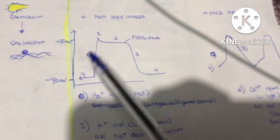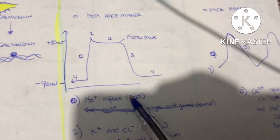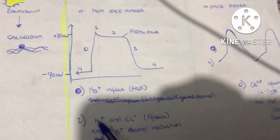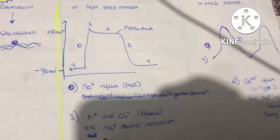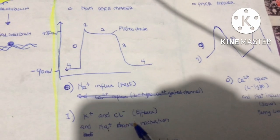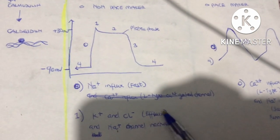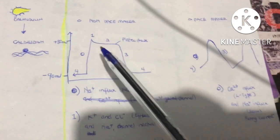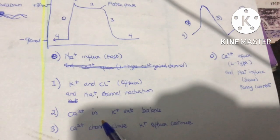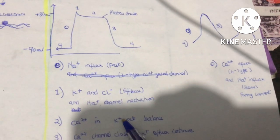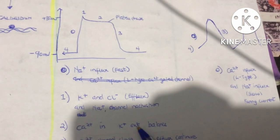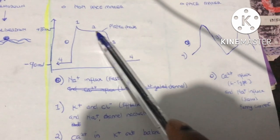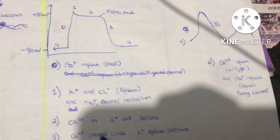Phase 1 is due to inactivation of sodium voltage-gated channels, with opening of potassium voltage-gated channels and chloride voltage-gated channels — potassium and chloride efflux begins. Phase 2 is the plateau phase, due to calcium influx and potassium efflux balancing each other, giving a constant membrane potential. Phase 3 is repolarization, due to closure of voltage-gated calcium channels while potassium voltage-gated channels remain open, causing continued potassium efflux.